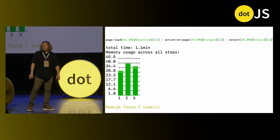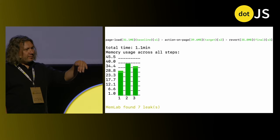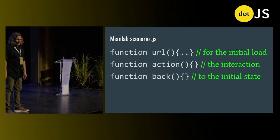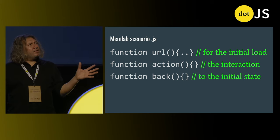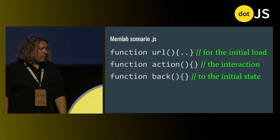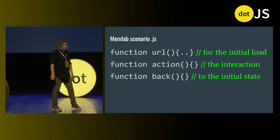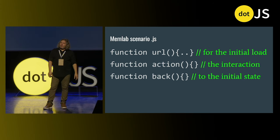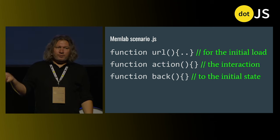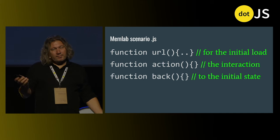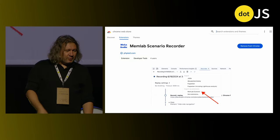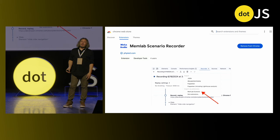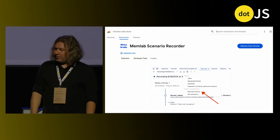MemLab in action on a famous — if not the most famous — maps application. You load the map, click 'show me hotels', and then say, ah no, go back. And as you can see, we leaked memory again. MemLab uses Puppeteer to drive the browser, and it needs so-called scenario files, which are just a JavaScript module where you implement three functions: where to go, what to do, and how to go back. If you're not familiar with Puppeteer or rarely use it, the API may be a bit of a learning curve. That's why I published MemLab Scenario Recorder — a Chrome extension that lets you just click around and get that scenario file generated for you.